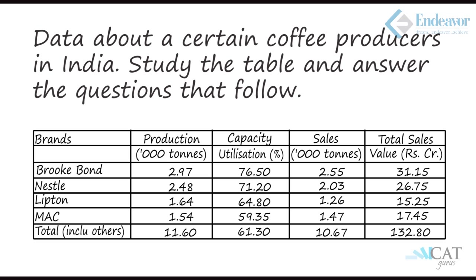There are four brands given: Brookbond, Nestle, Lipton, and Mac, and then there is a total row including 'others', which means others are not mentioned among the four. The columns are: production in thousand tons, capacity utilization, sales in thousand tons, and total sales value in rupees crores.